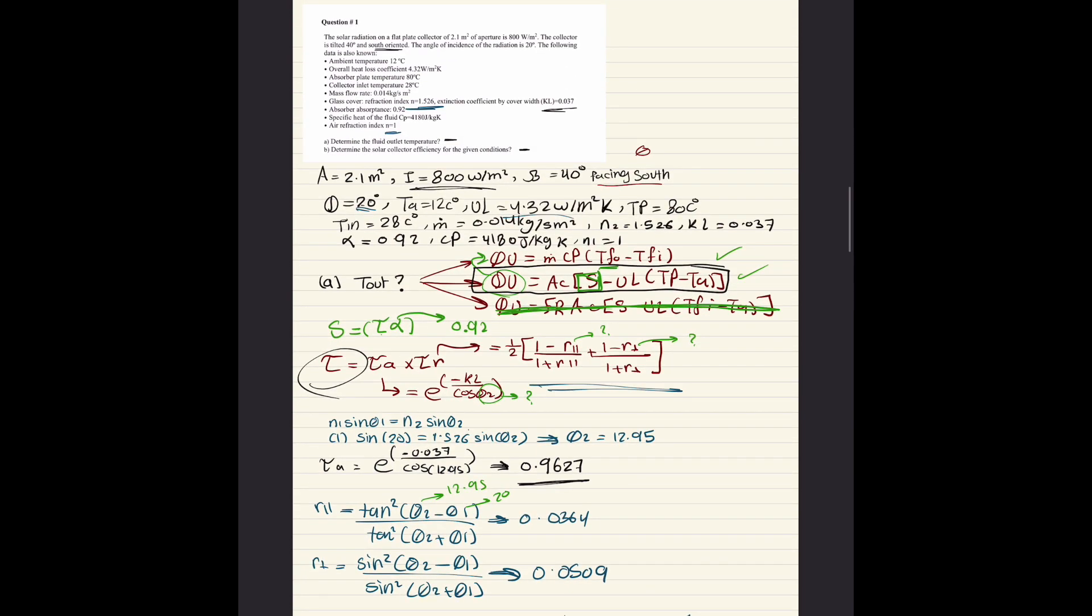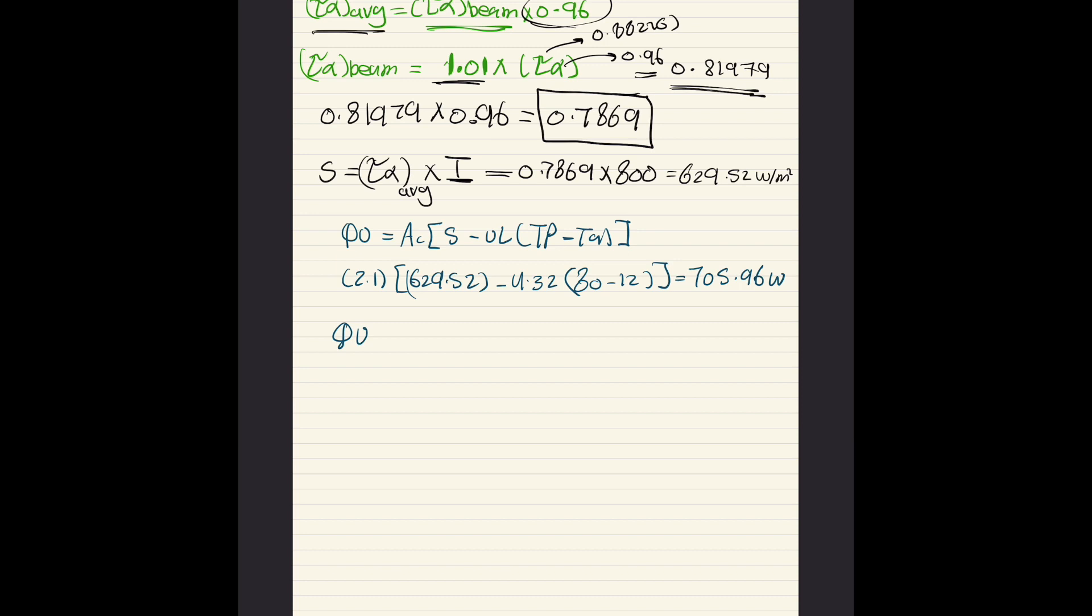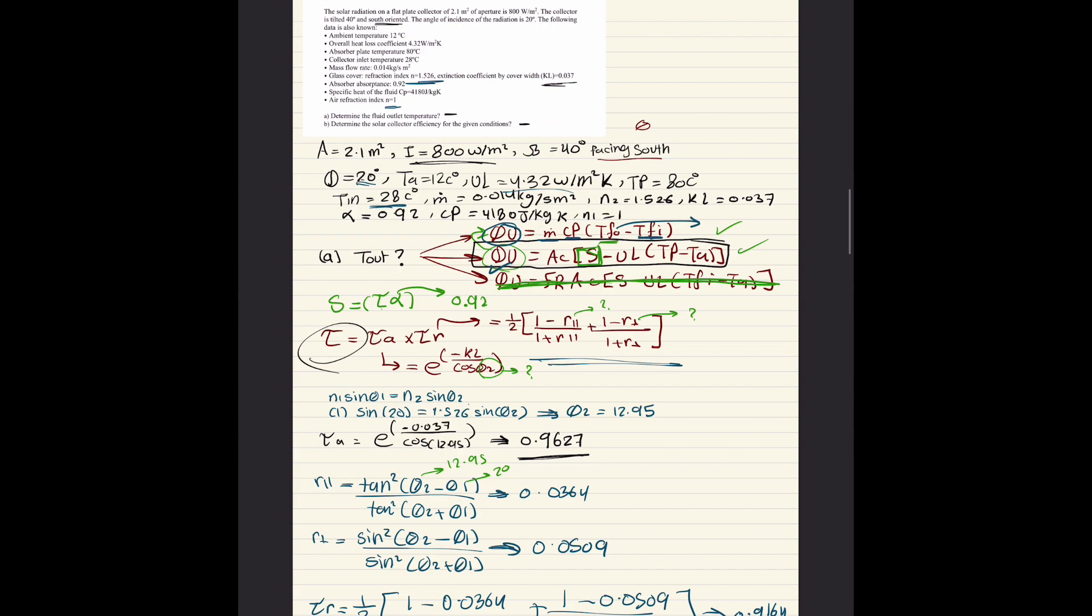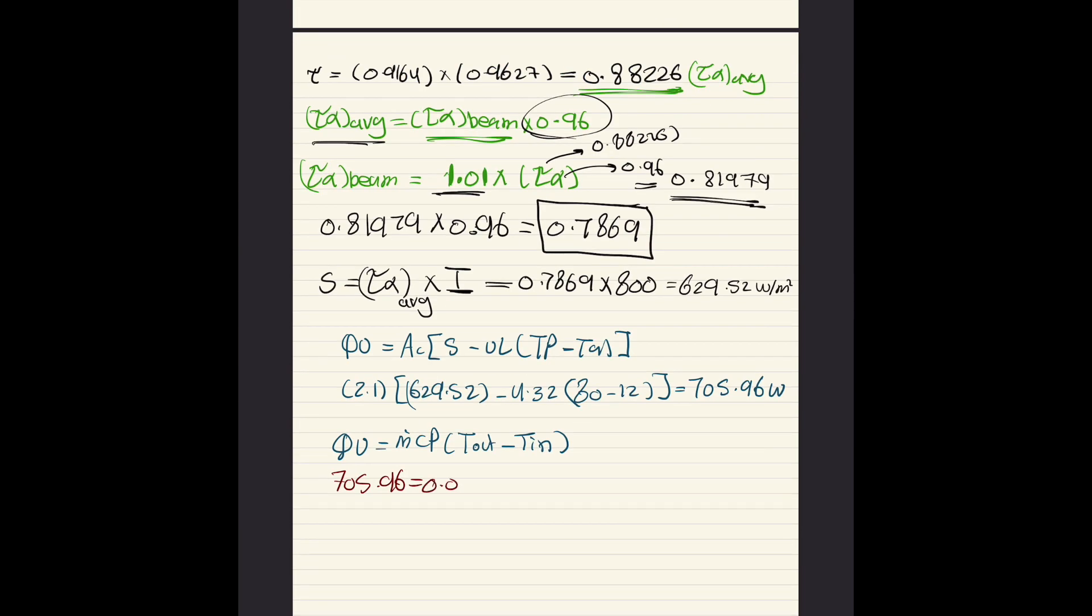Now we have QU, we can substitute it here. We have mass flow rate, we have CP, we have T inlet which is 28. We can simply substitute to find T out. QU equals m CP times T out minus T in. QU is 705.96 equals mass flow rate 0.014 times 4180 times T out minus 28. T out is 33.73 Celsius.